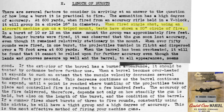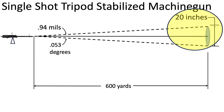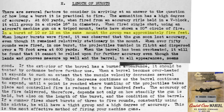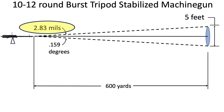The grouping increases from 18 inches to 20 inches for a .50 caliber single shot round fired from a tripod-mounted machine gun, with a cone of dispersion of 0.94 mils. The grouping increases further to a 5-foot diameter circle for 10 to 12 rounds fired from a tripod-mounted machine gun, with a cone of dispersion of 0.83 mils.